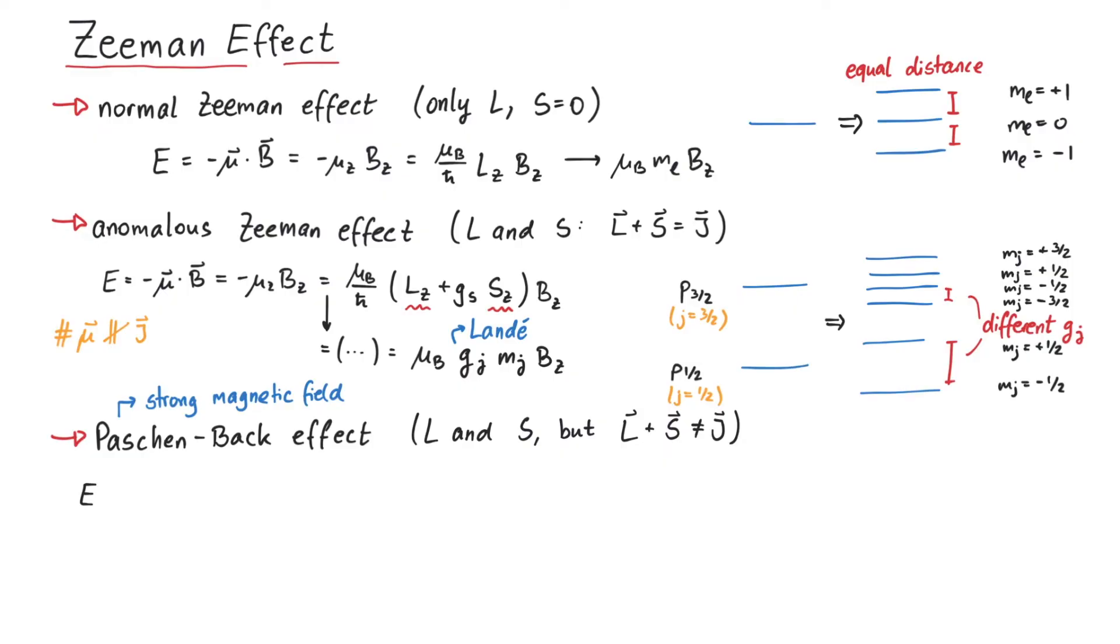Therefore, we can use the result that we dismissed earlier, containing lz and sz. After replacing the operators with their eigenvalues, we get mu b times ml plus gs ms times the magnetic field.